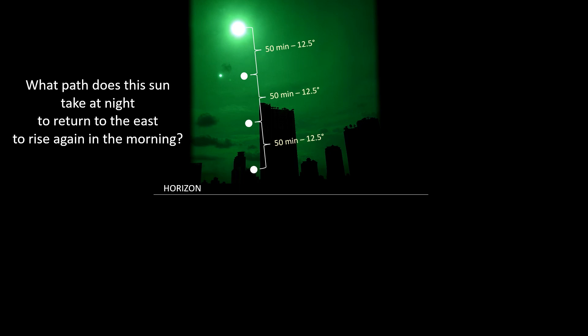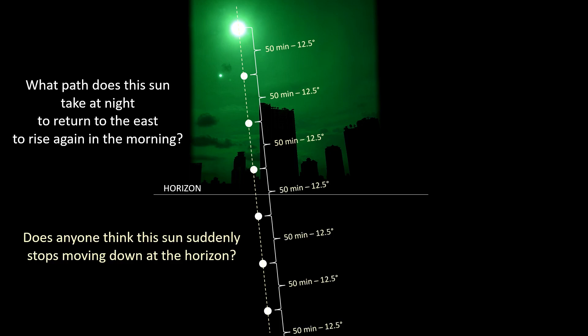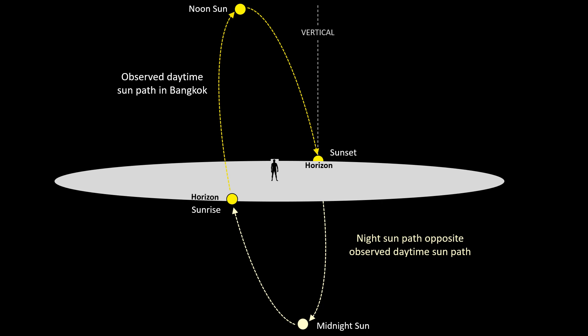Now, another question I asked in that video is, what path does this sun take at night to return to the east to rise again in the morning? And it makes logical sense that the sun is going to continue on that same path at the same angular speed after sunset. Does anyone really think that this sun would suddenly stop moving down at the horizon? So, this means that the sun path at night is opposite of the observed daytime sun path. And of course, when you live in Bangkok, and the daytime sun path is at such a steep angle to the horizon, this means at night the sun travels below you.